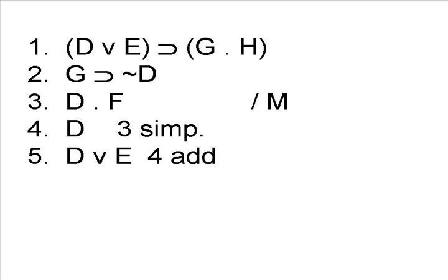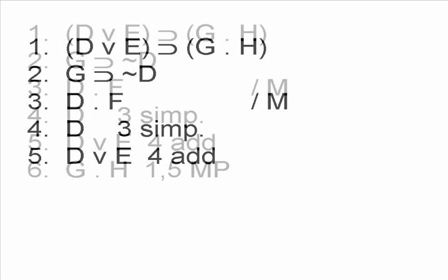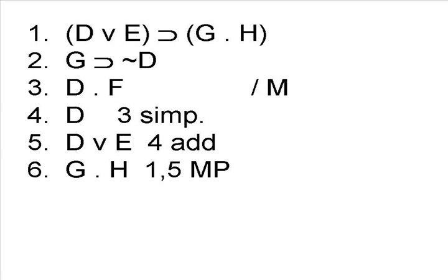It might not be immediately obvious why we want to do this, but look at line 1. The antecedent is the disjunction of D or E. Having added E to line 4, we now create the antecedent so we can do a modus ponens. So step 6 allows us, using the rule of modus ponens, to derive G and H.